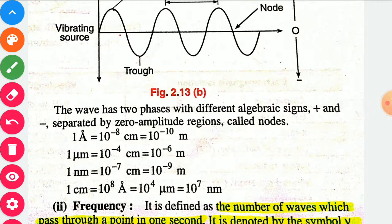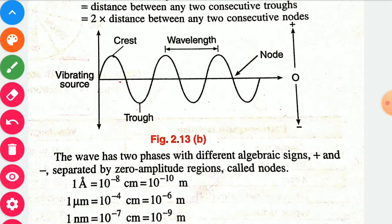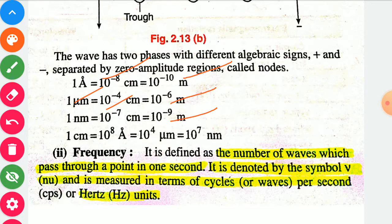The wave has two phases with different algebraic signs — plus and minus — separated by a zero-amplitude region called nodes. Upward direction is indicated with plus and downward with minus. Some unit conversions: one angstrom unit equals 10⁻¹⁰ meters or 10⁻⁸ centimeters. One nanometer equals 10⁻⁹ meters or 10⁻⁷ centimeters.